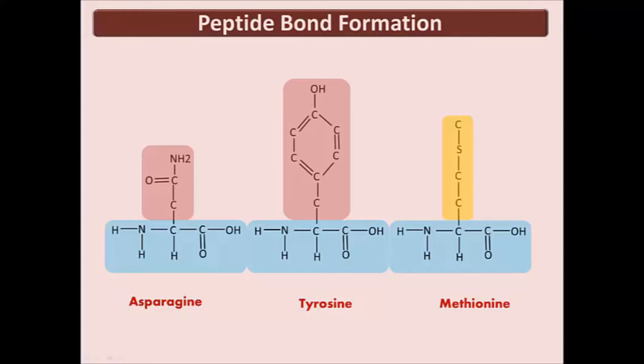Here we have three different amino acids: asparagine, tyrosine, and methionine. Asparagine and tyrosine are both polar amino acids; methionine is nonpolar. The blue box again represents the amino group, carboxyl group, and hydrogen atom of each amino acid. Amino groups and carboxyl groups both form peptide bonds. This means that the carboxyl group of one amino acid — in this case asparagine — can form a peptide bond with the amino group of tyrosine.